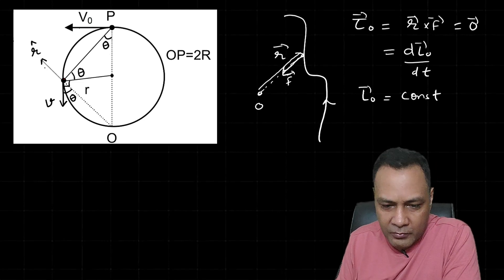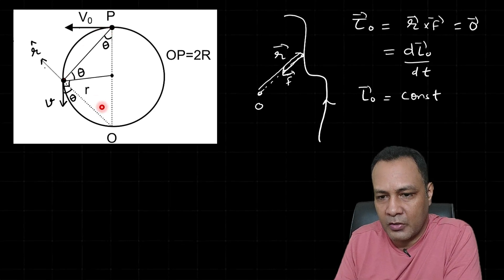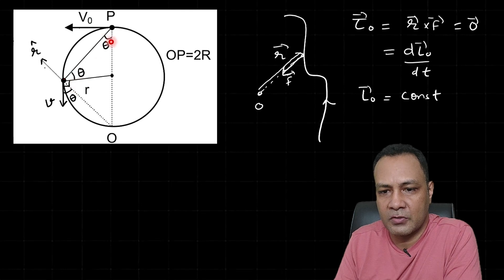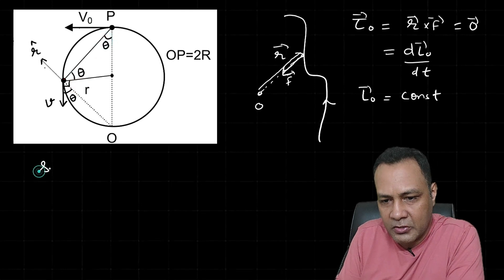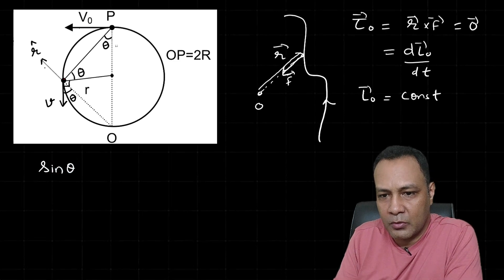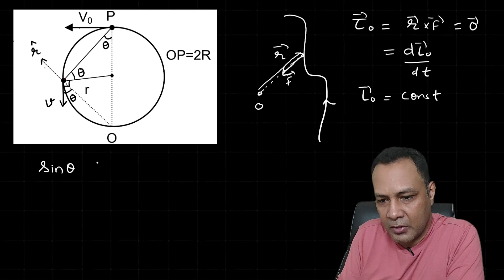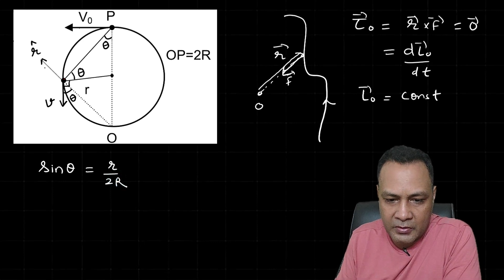Now let me establish the geometry between small r and 2R. In the right-angled triangle formed (the 90° angle comes from the diameter subtending a right angle), sin θ equals the opposite side over the hypotenuse: sin θ = small r / 2R.